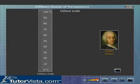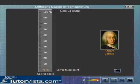In the Celsius scale, zero degrees Celsius — the melting point of ice — is taken as the lower fixed point, and one hundred degrees Celsius — the boiling point of water — is taken as the upper fixed point. The space between these two fixed points is divided into one hundred equal divisions.